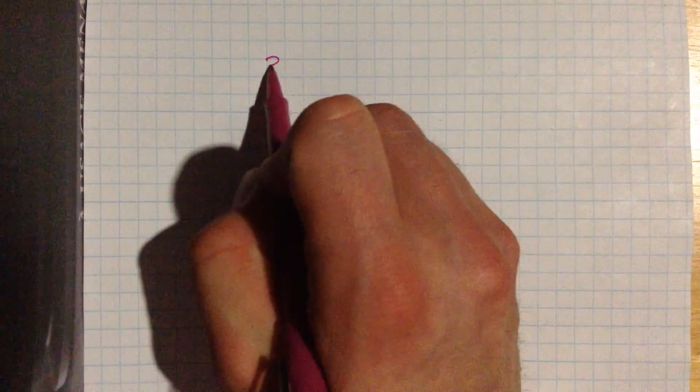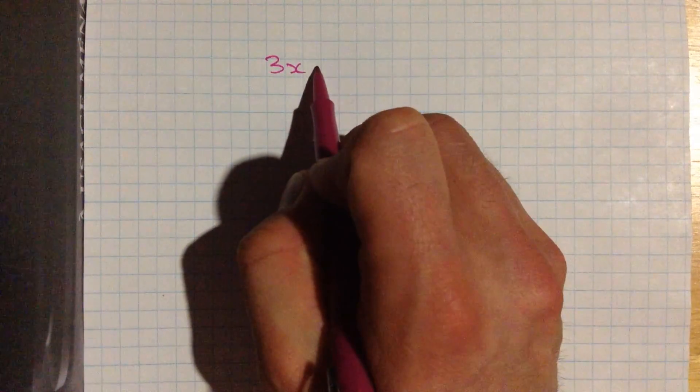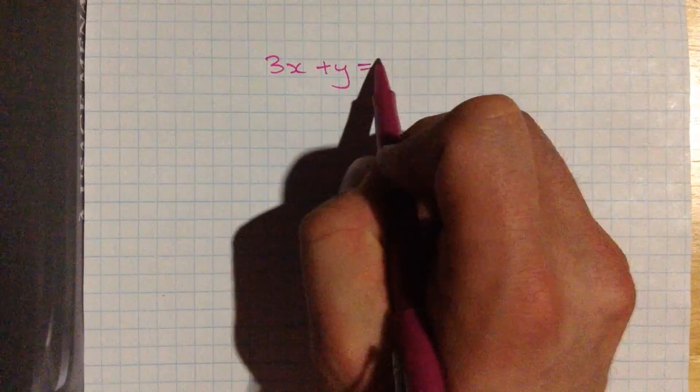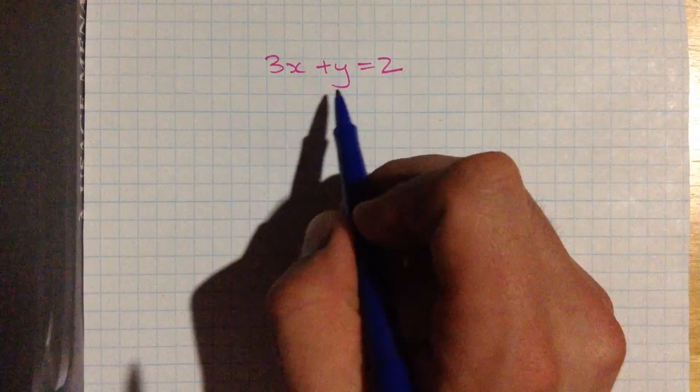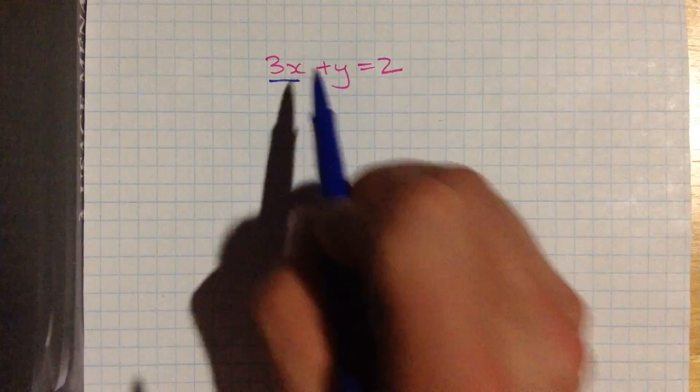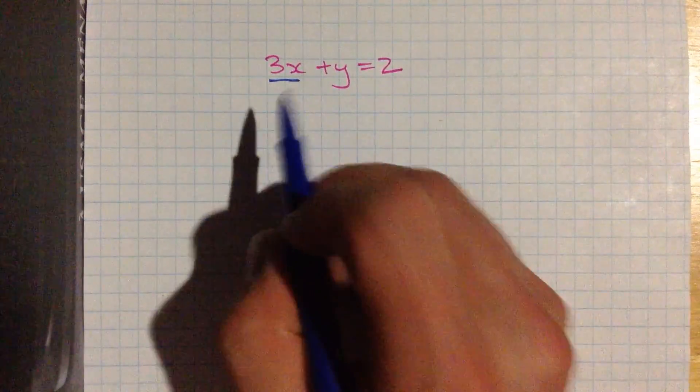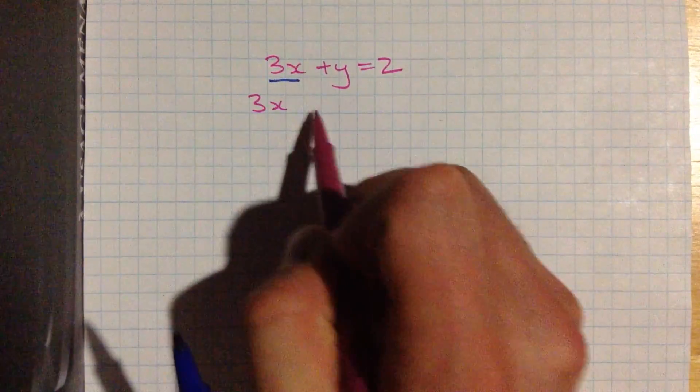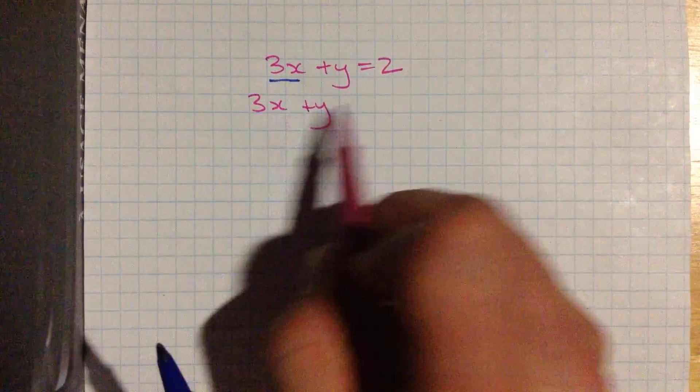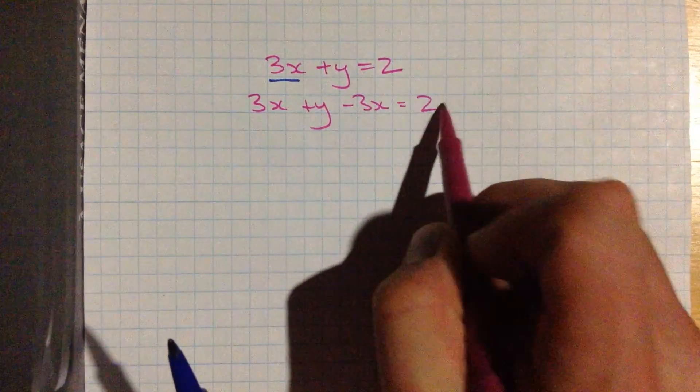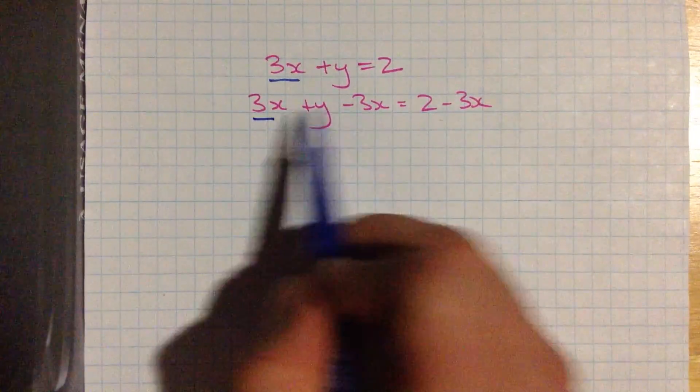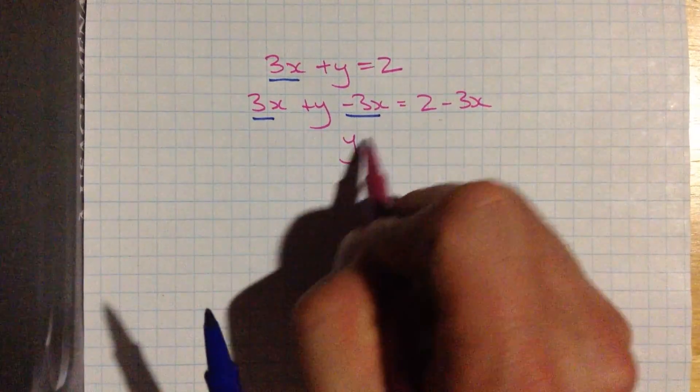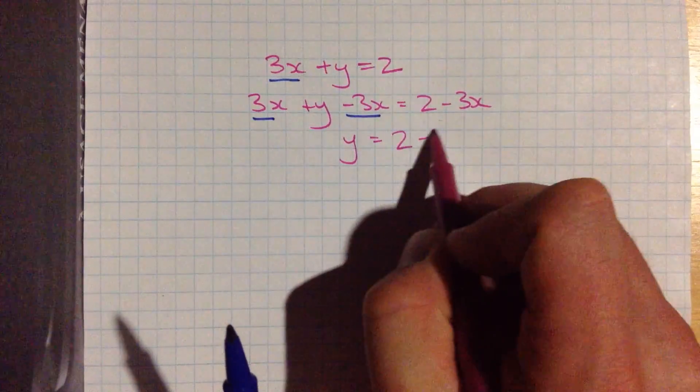Let's try something a little more challenging. 3x plus y equals 2. Here again, we want to get the y by itself. To do this, we notice that we have a 3x over on the same side. We don't really want that there anymore. So to move that, we're going to subtract 3x from each side. 3x here and minus 3x here. That's 0. So we're left with y equals 2 minus 3x.